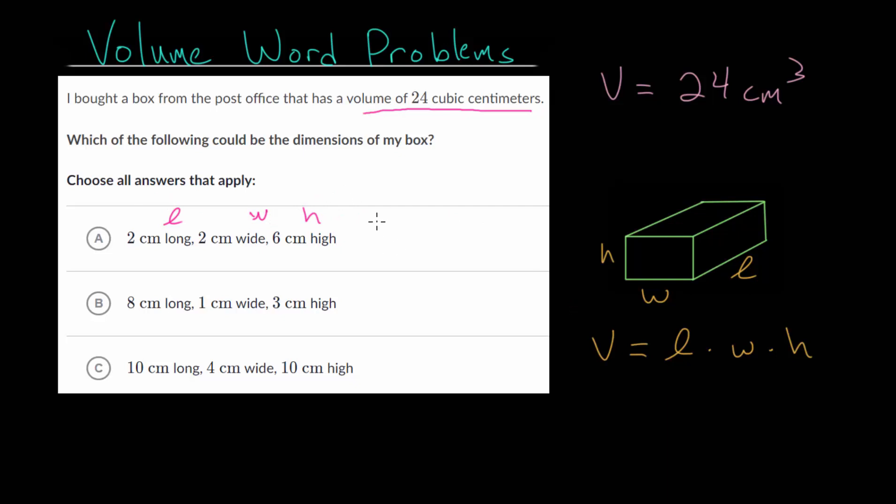Multiplying these together, our volume would be 2 times 2 times 6. We'd want to consider units too, but we can put that at the end. So this is 4 times 6, which is 24, and we'd have cubic centimeters. So it looks like these dimensions of the box actually makes sense, since we need a volume of 24 cubic centimeters.